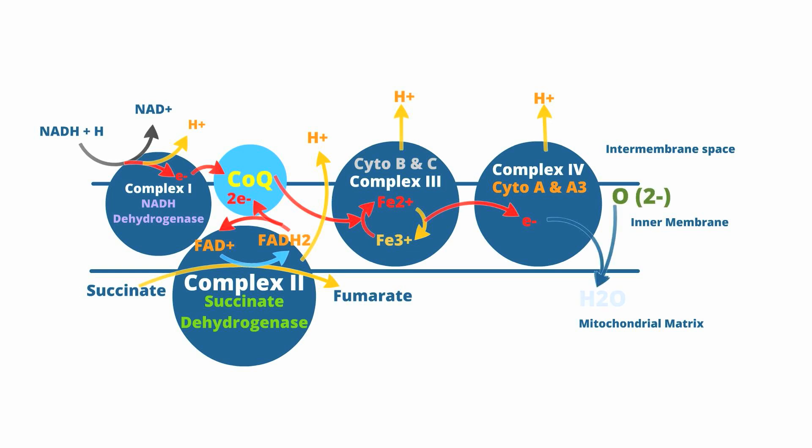In the entire electron transport chain, electrons are passed from complex to complex. In the meantime, each complex pushes hydrogen atoms to the intermembrane space. This is the most important point about the ETC: the shuttling of hydrogen atoms into the membrane space creates a diffusion gradient. This gradient is like stretching a rubber band — there's a lot of energy being put in, and as soon as you let go, it goes flying because of the pent-up energy. The hydrogen gradient works the same way. In our next video, we'll talk about oxidative phosphorylation, which is the process where the gradient will be relieved, creating a large amount of ATP.